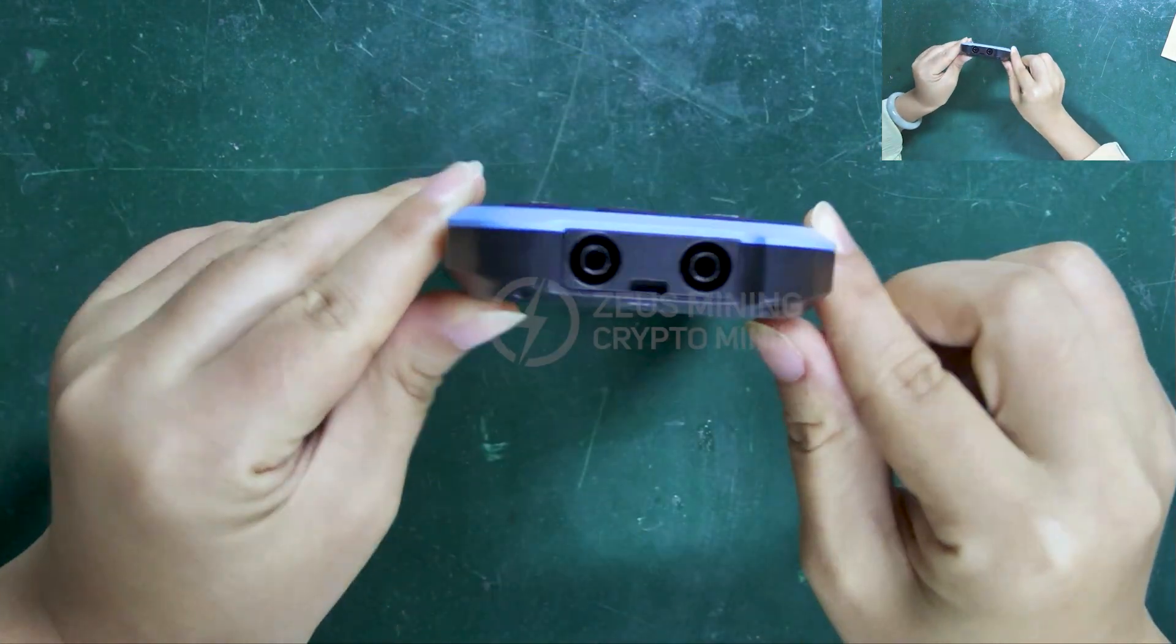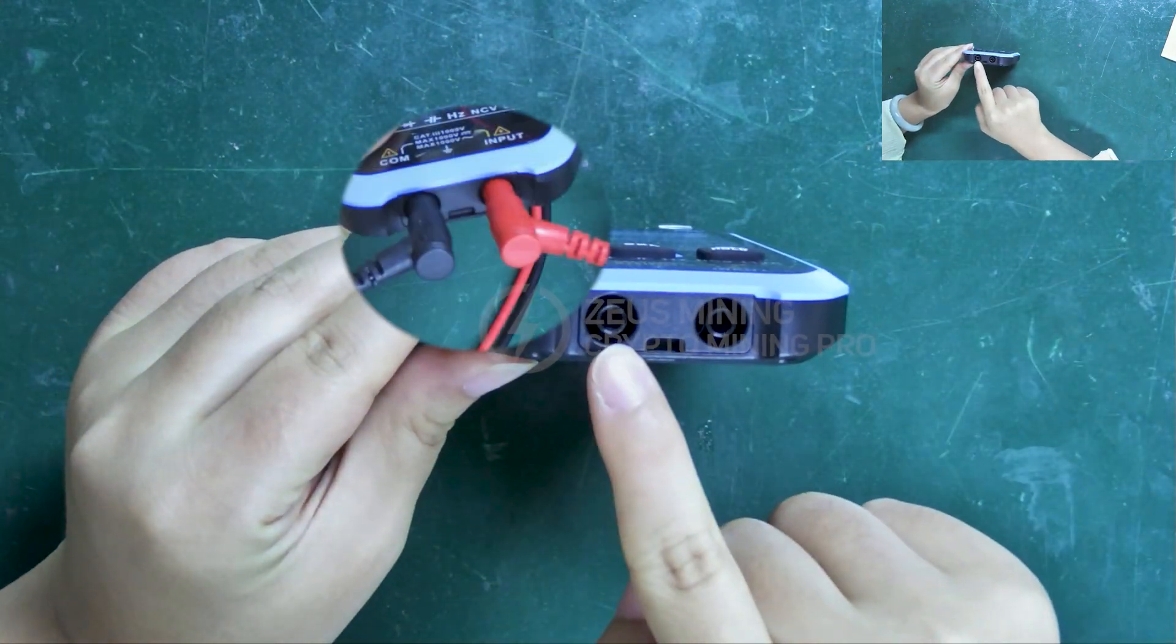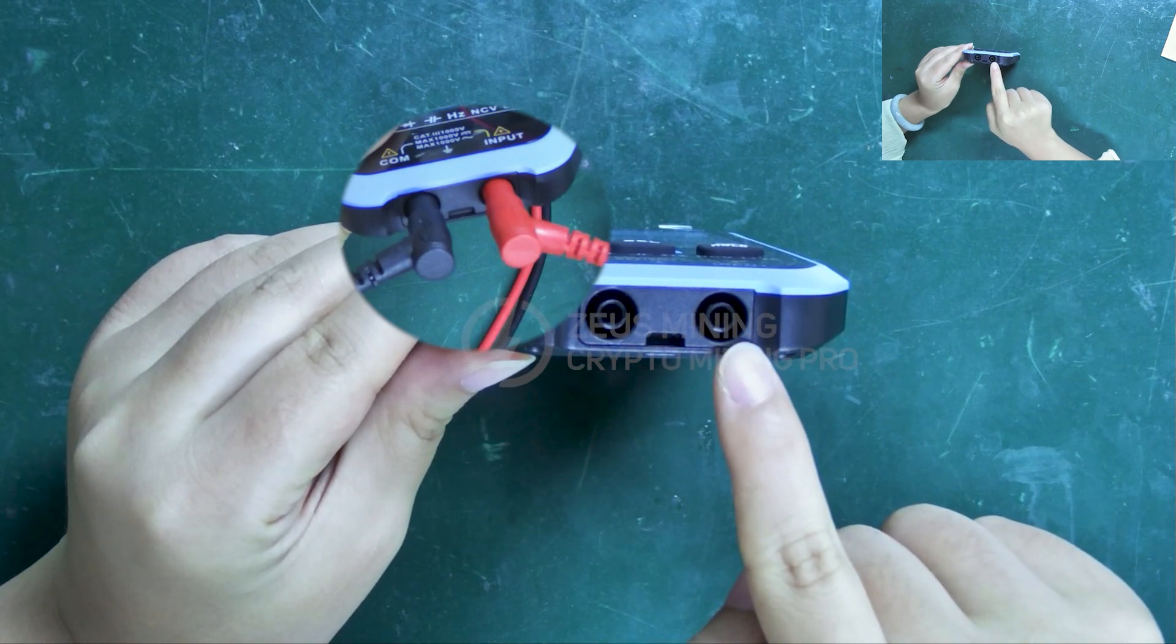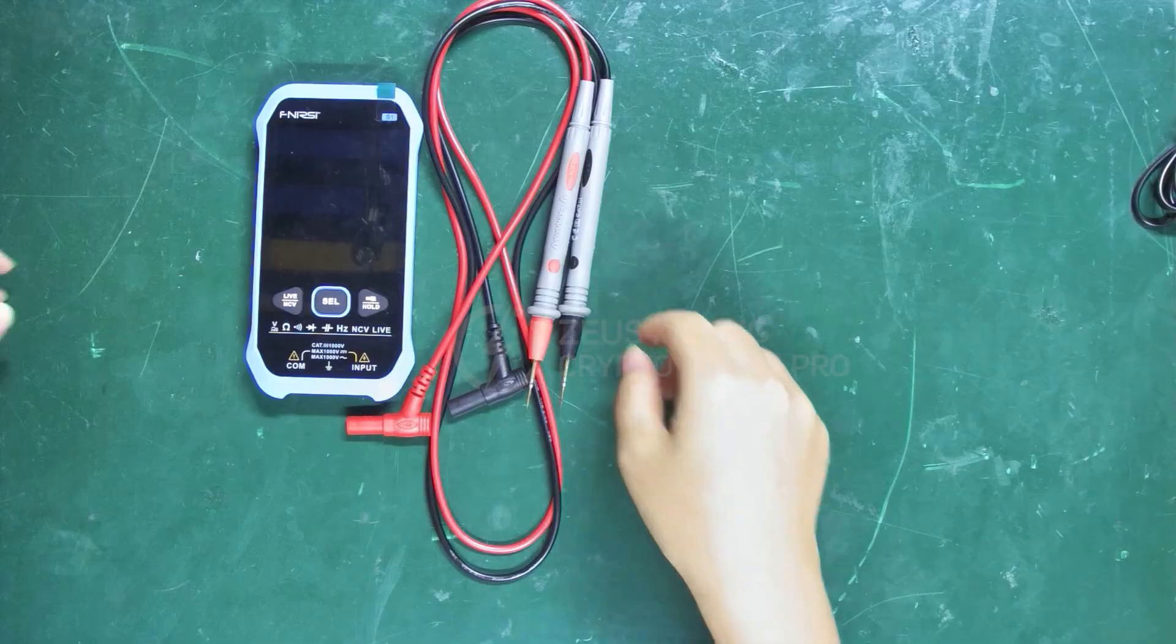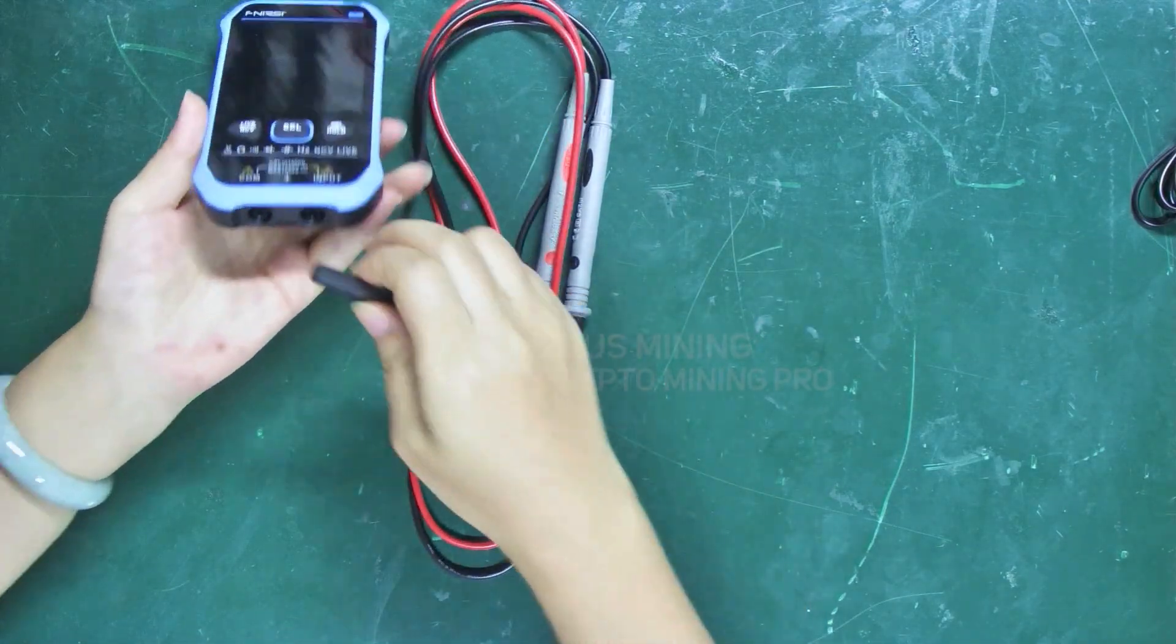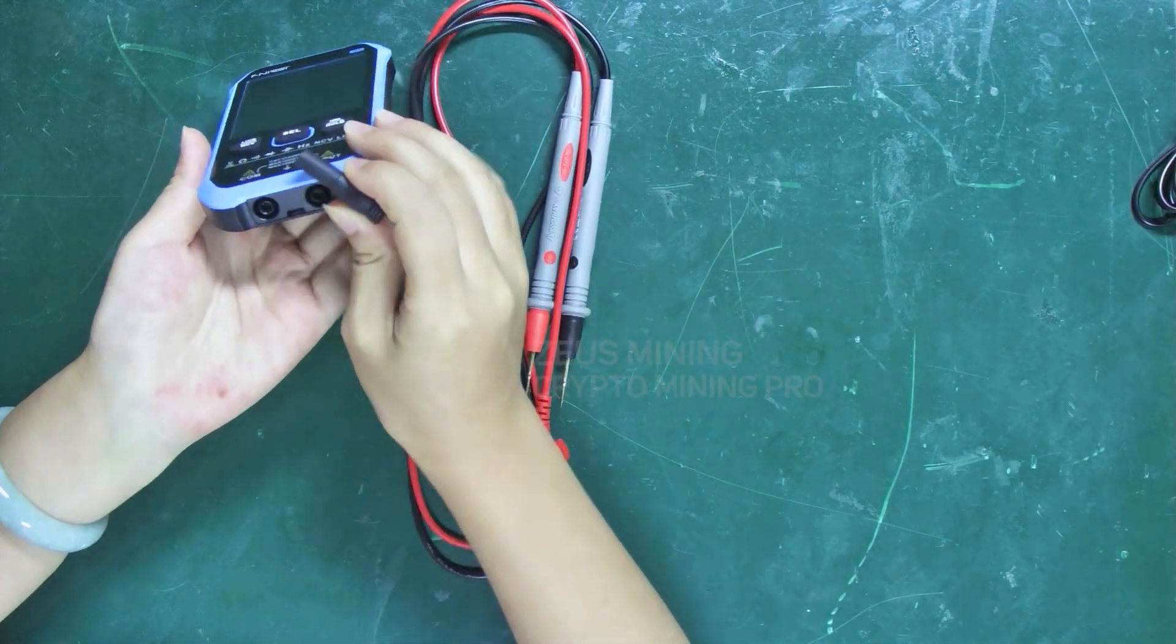There are two sockets under the multimeter: the left one for the black test lead and the right for the red one. Next I'll demonstrate its uses. First, insert the red and black test leads into the multimeter.